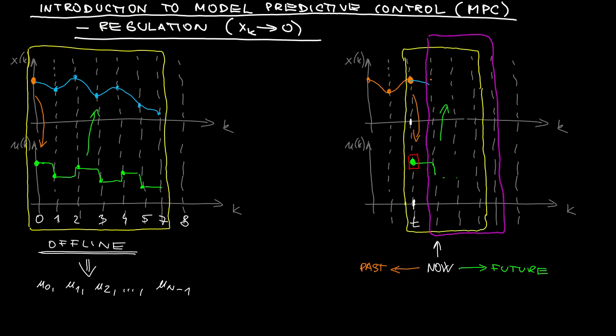That means we again measure or estimate the state, and based on the value of the current state, we compute the sequence of controls over this finite time window, finite horizon.